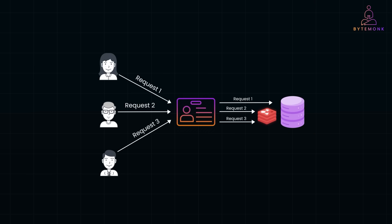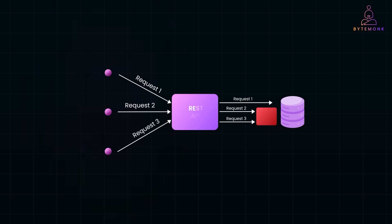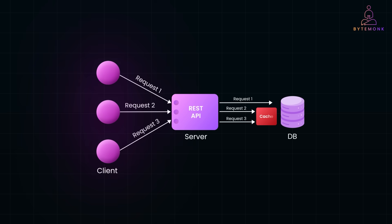Caching is like keeping a shortcut to frequently traveled paths — it saves time and resources. In the world of APIs, caching can dramatically improve performance and scalability by reducing the load on databases and servers. But how do we implement caching effectively in REST APIs? Let's go step by step, starting with the basics.